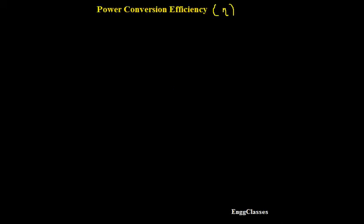Hello everyone, welcome to NG Classes' YouTube channel for a video lecture series on basic electronics. In this video we will consider one of the very important parameters of the half-wave rectifier, that is power conversion efficiency, or simply called efficiency. Efficiency is indicated by the letter eta. How do we measure efficiency? Efficiency is always with respect to output divided by input.